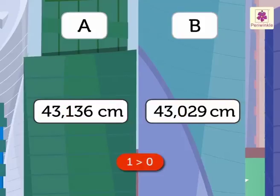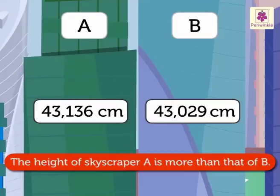Here, 1 is greater than 0. So, the number 43,136 is greater than the number 43,029. So, here the height of skyscraper A is more than that of B.